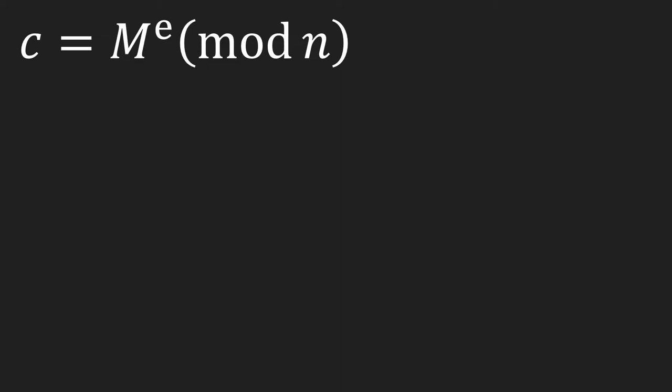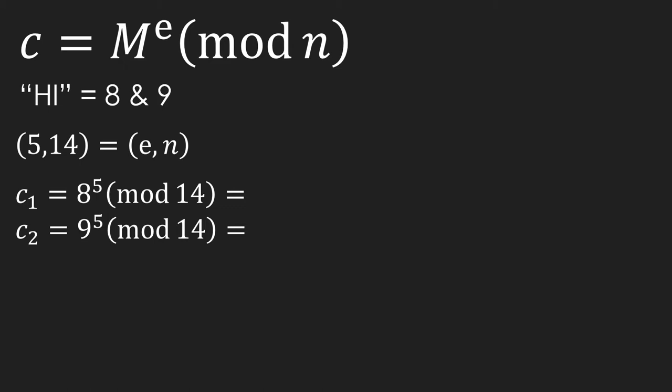Let's see how this would work mathematically. For our purposes, the message is just going to be hi, which would be the numbers 8 and 9. You would insert the public key e equals 5 into the encryption equation m to the power of e mod n, where m is our message. If we do this for both characters, we obtain 8 and 11, which turn into hk, our ciphertext.